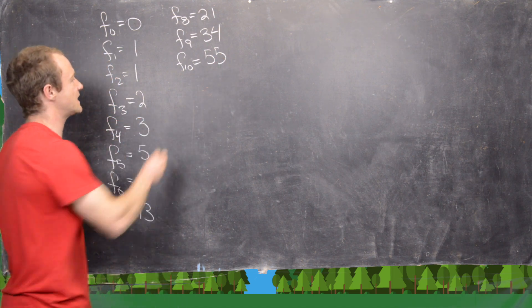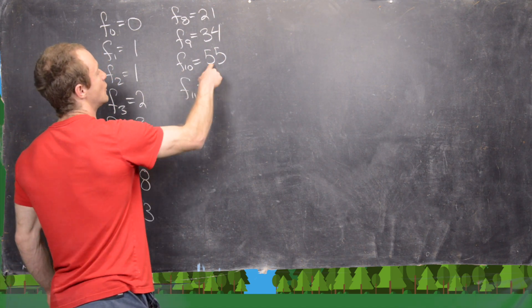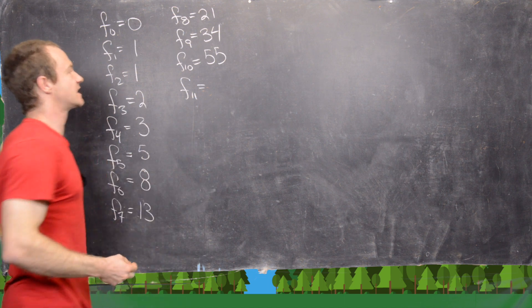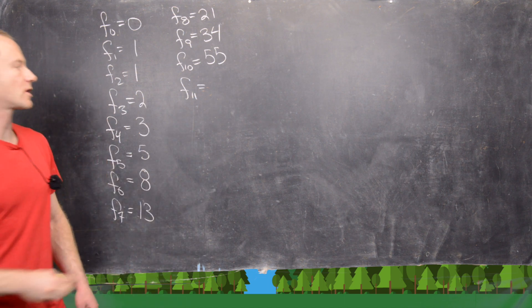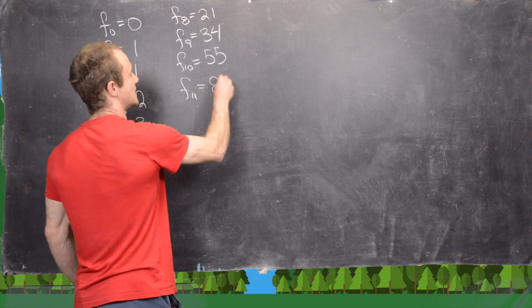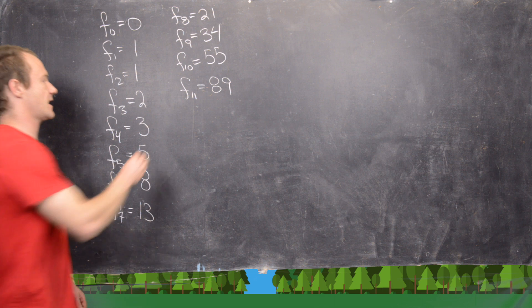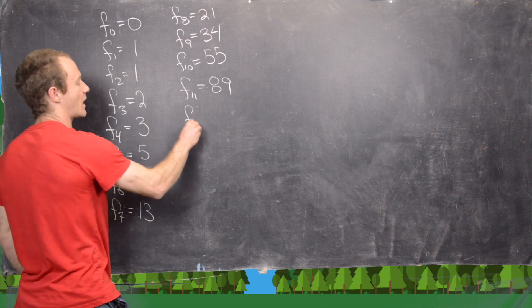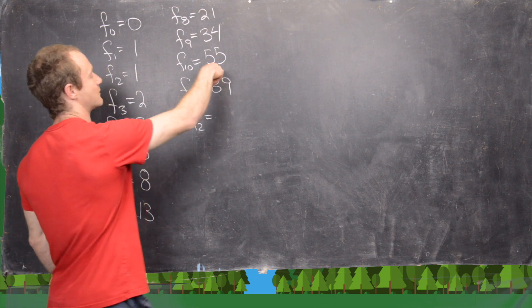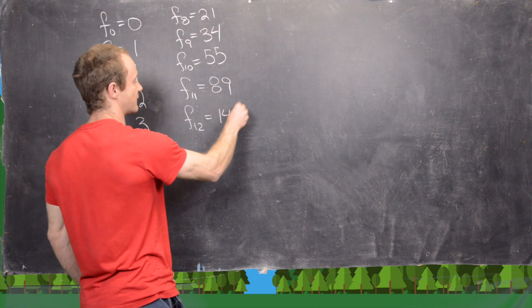The 11th Fibonacci number will be 55 plus 34, so that's going to give us 89. The 12th Fibonacci number will be 89 plus 55, that's 144.